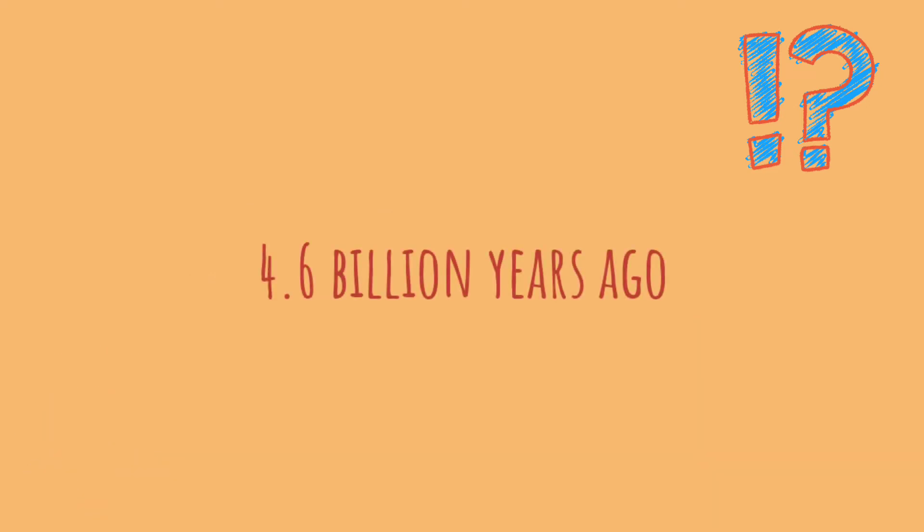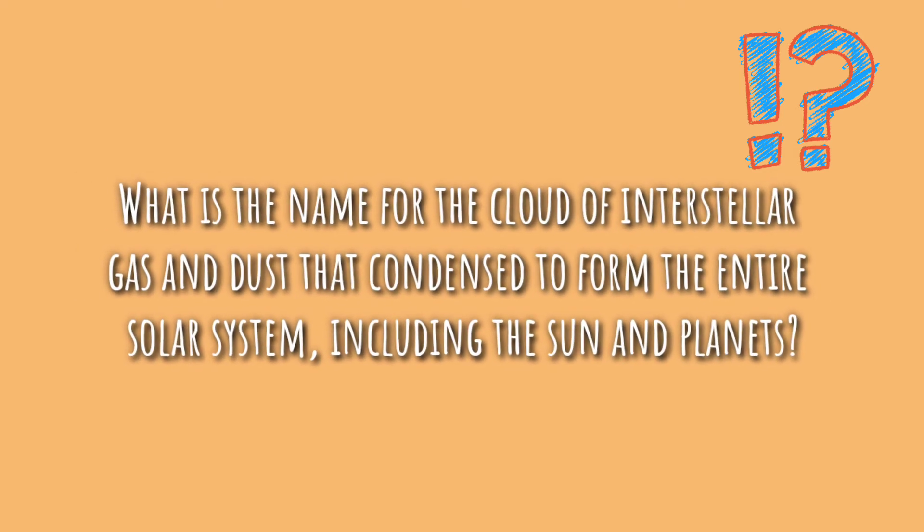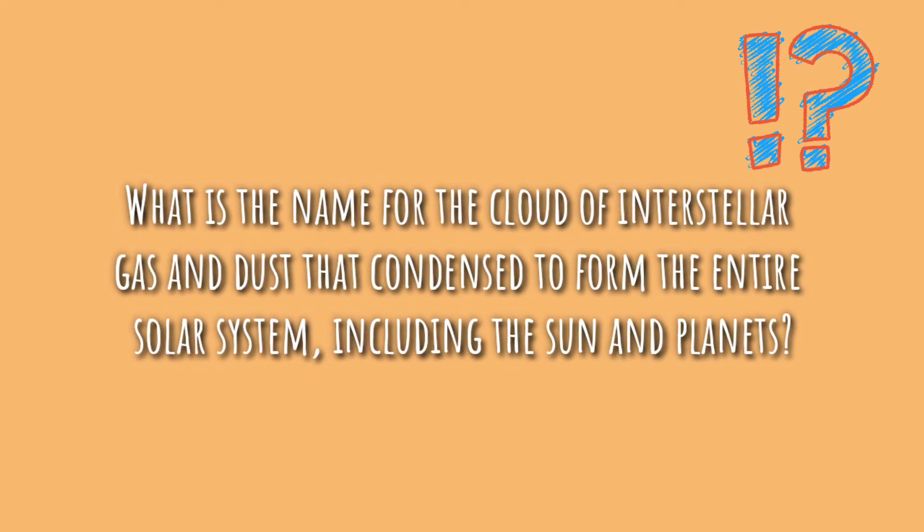Number three: What is the name for the cloud of interstellar gas and dust that condensed to form the entire solar system, including the sun and the planets? Solar nebula.